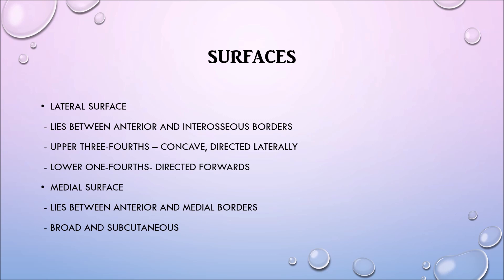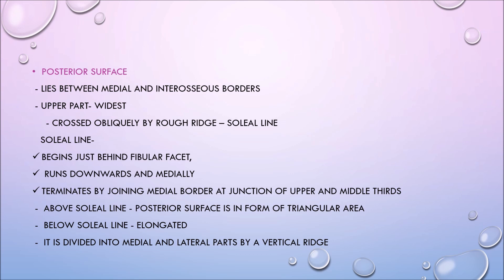Looking at the surfaces in detail: the lateral surface lies between the anterior and interosseous borders; its upper three-fourths is concave and directed laterally, while its lower one-fourth is directed forwards. The medial surface lies between the anterior and medial borders and is broad and subcutaneous. The posterior surface lies between the medial and interosseous borders; its upper part is the widest and is crossed obliquely by a rough ridge called the soleal line.